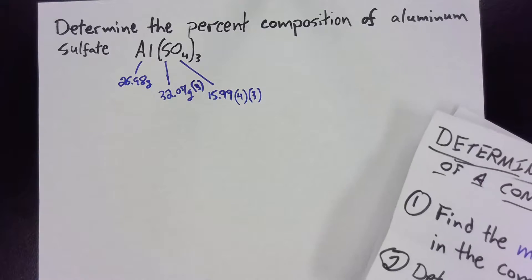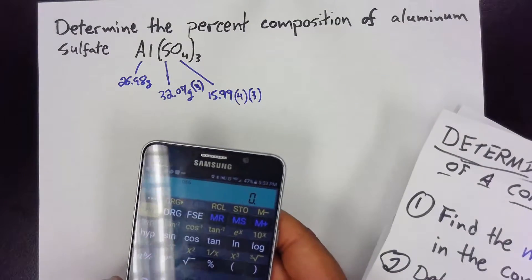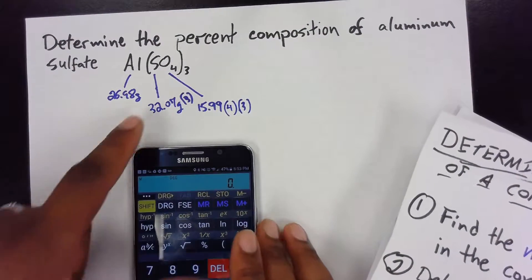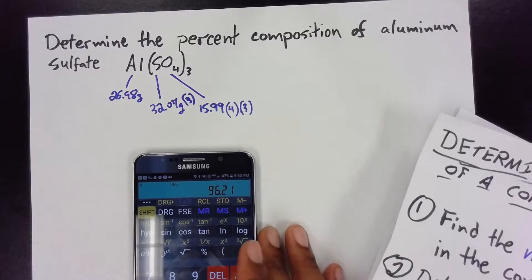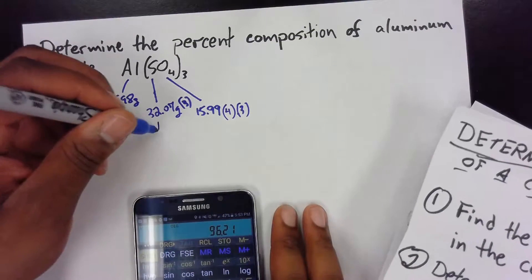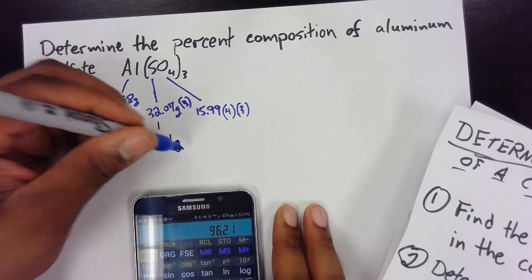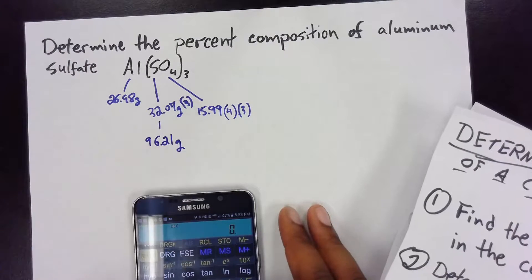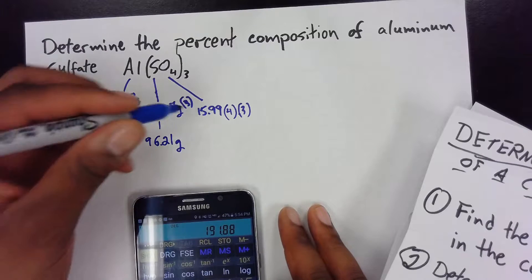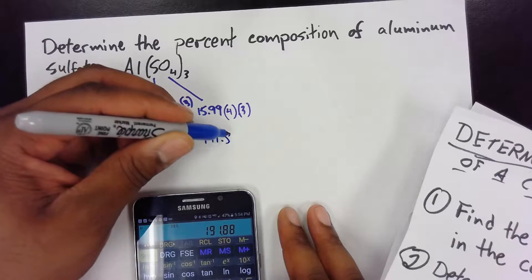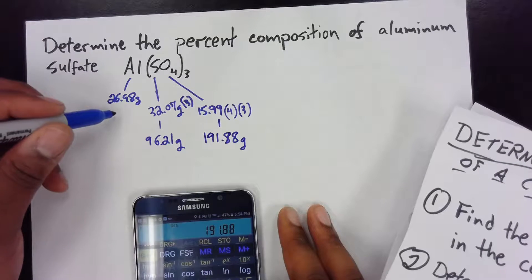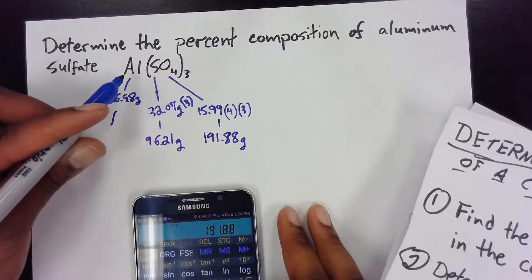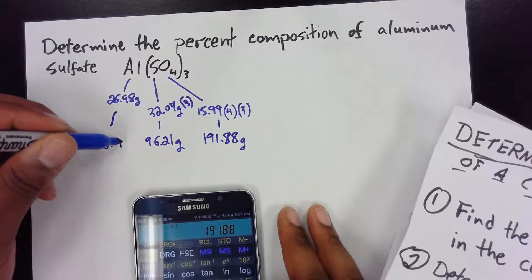Using the calculator: 32.07 times three gives 96.21 grams of sulfur. Then 15.99 times four times three gives 191.88 grams of oxygen. And aluminum remains just one atom with a mass of 26.98 grams.